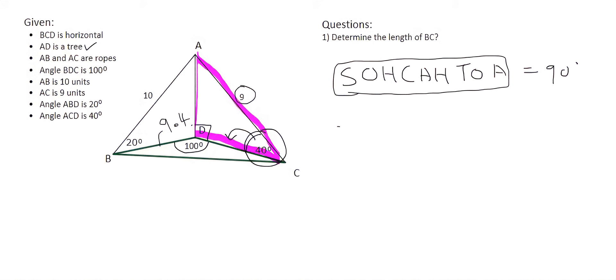Once again, we're going to use cos. So we'll say cos 40 is equal to the adjacent which is DC over the hypotenuse which is 9. We then times both sides by 9, and so that gives us DC as 6.89.